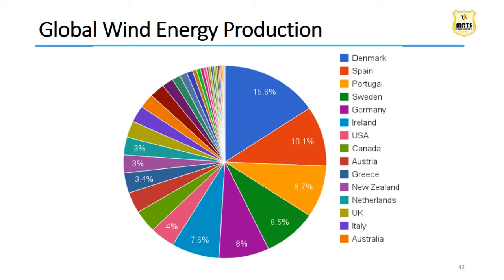Global wind energy production: despite our mission, India is not even in the top 10 or 20 countries in the global wind energy production index. We are producing less than 1% in the global scenario. Denmark gives the highest, at 15.6% of the world's wind energy. We have to work on this - our industry has to work to get more wind energy and stop the thermal power plants. We have to save our fossil fuel for the future.